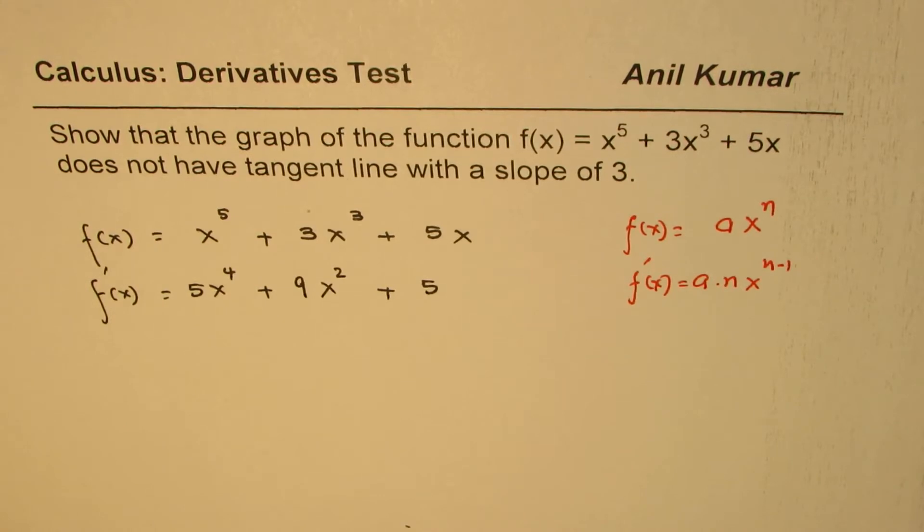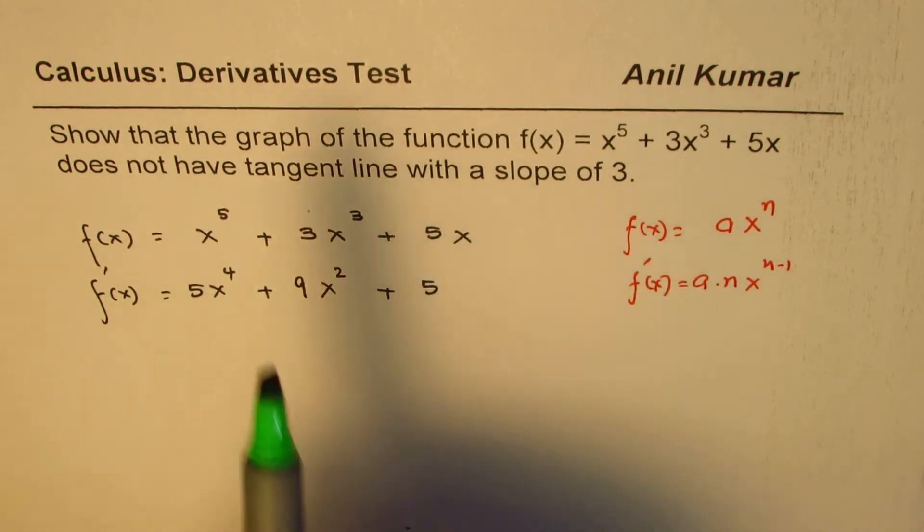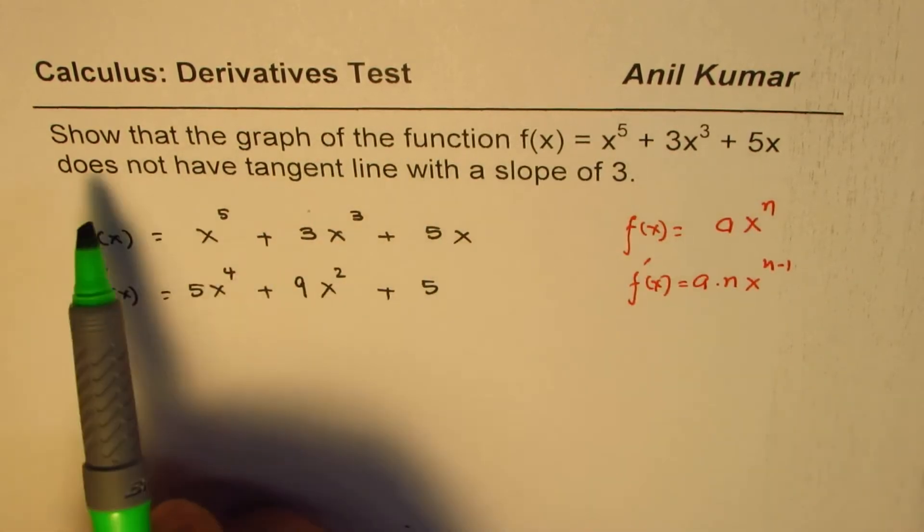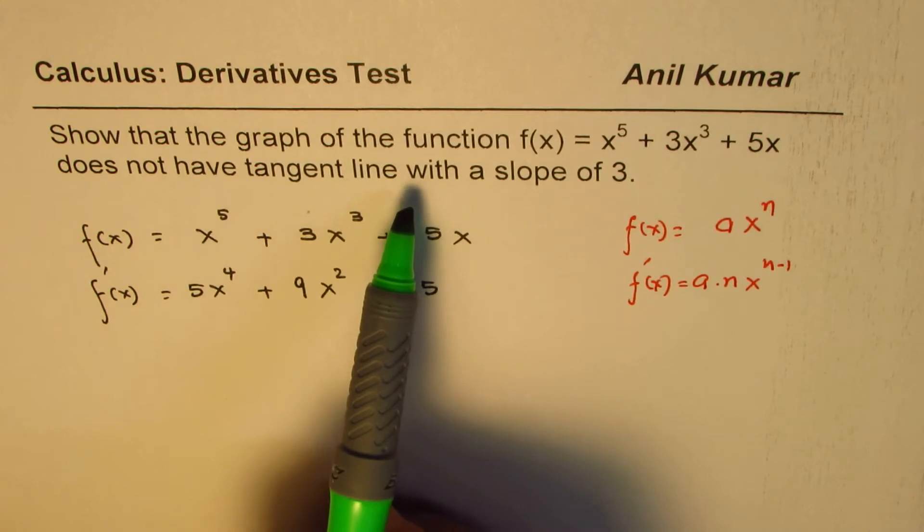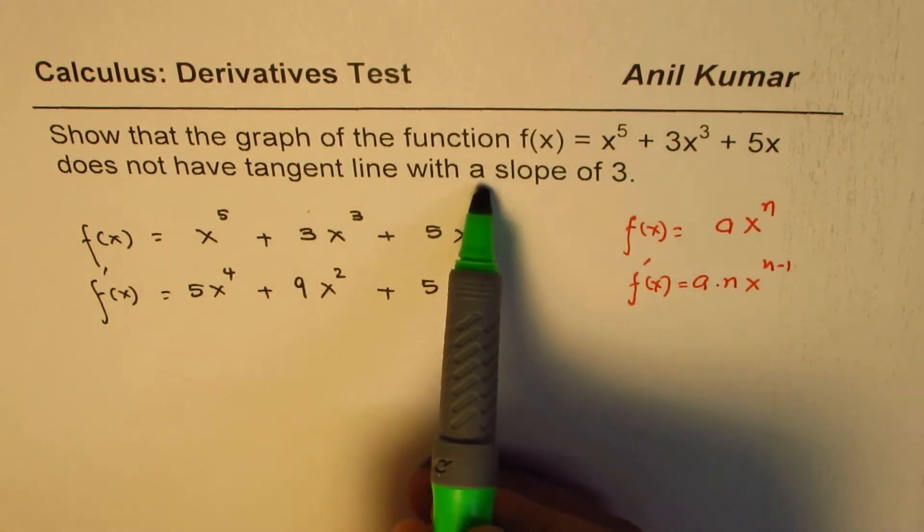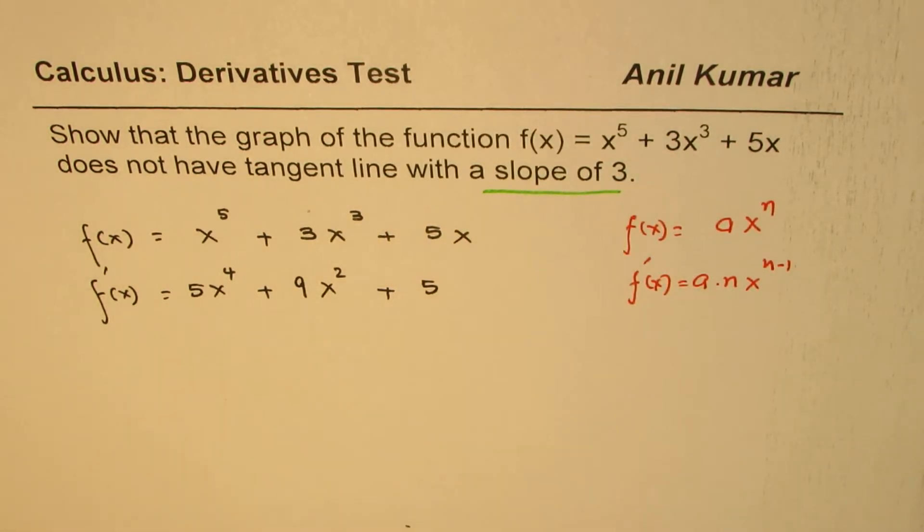Now from here, how can we conclude that the graph of this function does not have a tangent line with slope of 3? Well, one way is that we could always write 3 here as the slope and calculate the value of x. That could be one method.